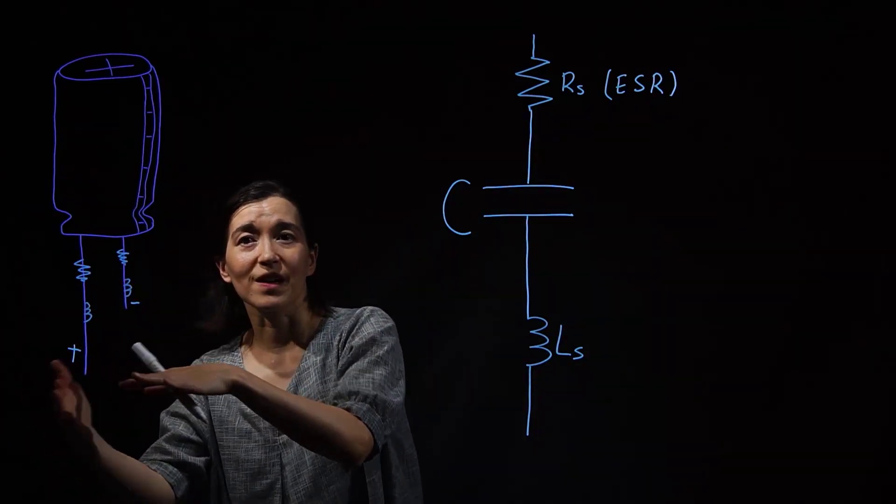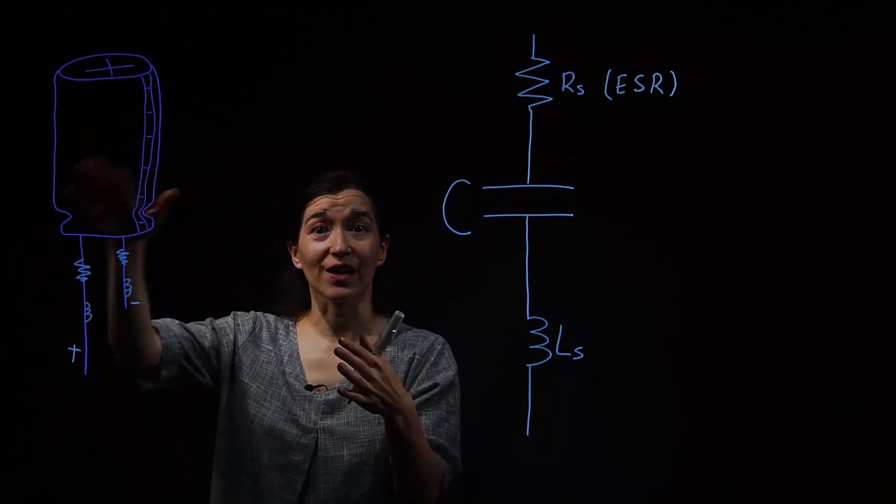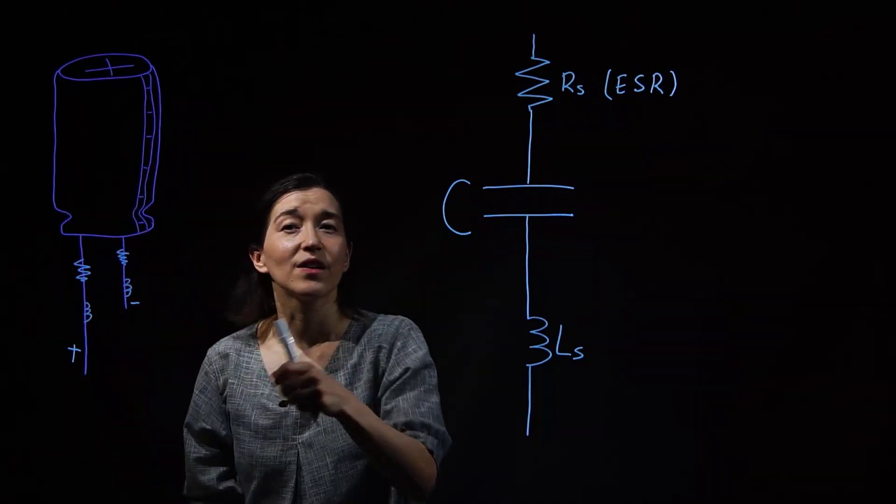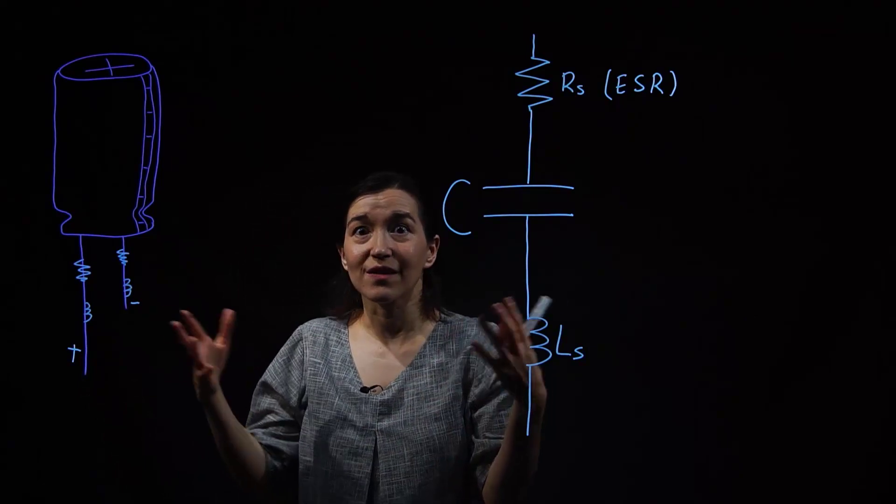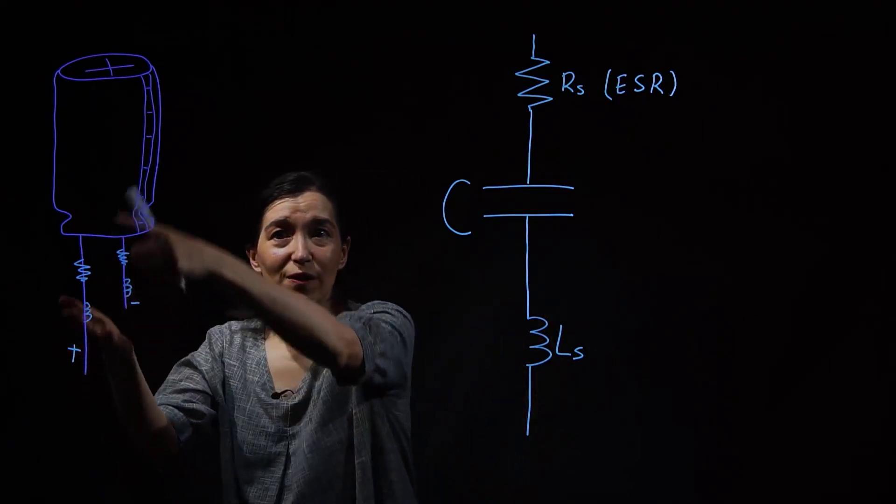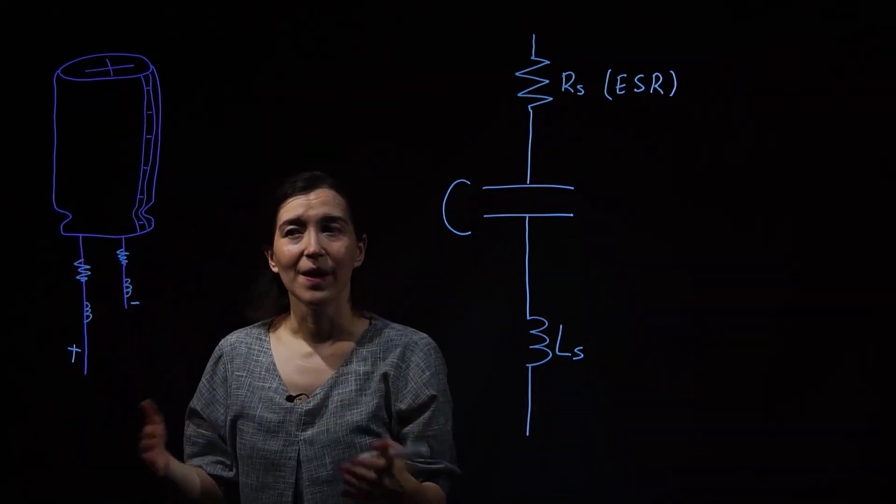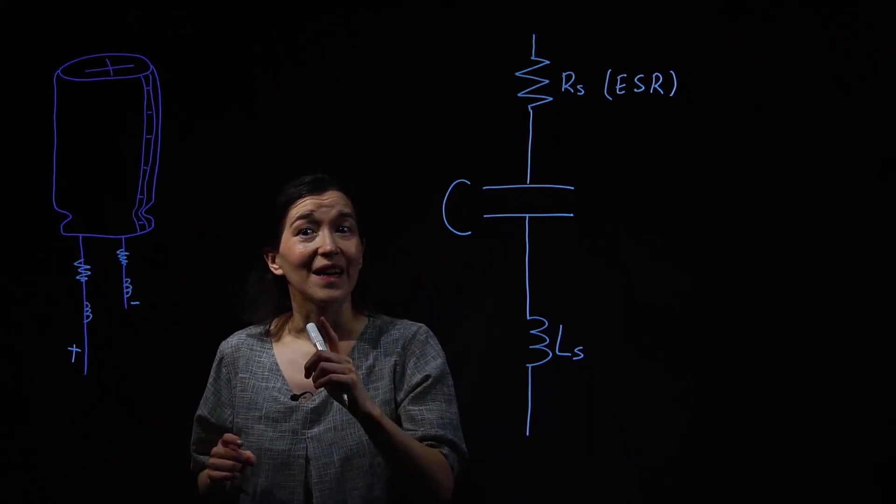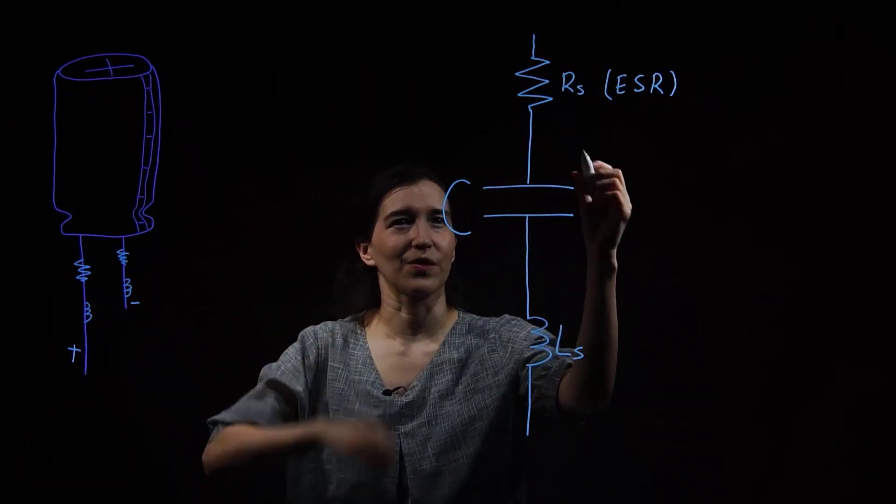So you use the voltage before you unplugged it, and then you let it sit. No connection just by itself. And then you measure it again. You will see that the voltage has decreased. But there's nowhere for the charge to go. But the voltage has decreased. This is a sign of parallel resistance.